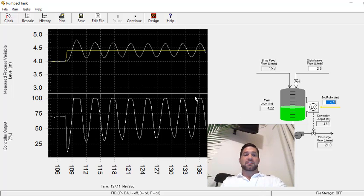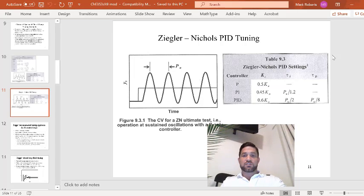So now we have the ultimate period and we have the value of the gain, which is 150. We can use those values in table 9.3 to determine the gain, reset time, and derivative time constant for the PID settings.